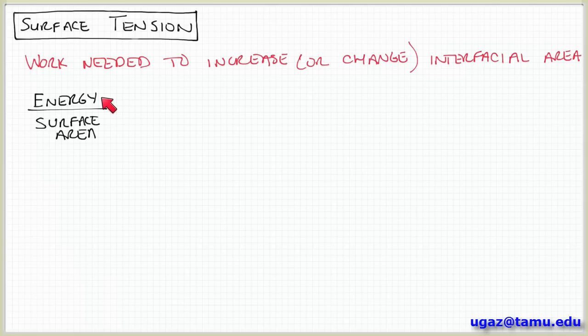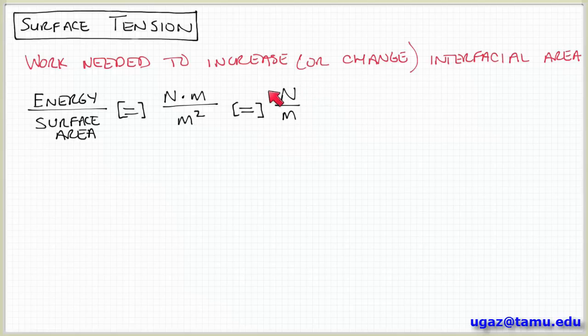So we're talking about energy associated with a change in surface area. Energy has units of joules or newton meters. Area has units of meters squared. So when we cancel out one of these meters, we get that this idea, surface tension, intuitively has units of newtons per meter.